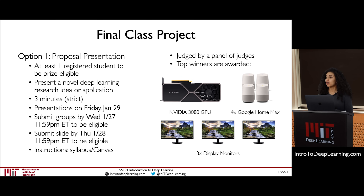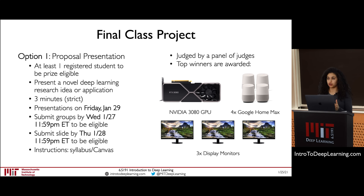For those taking the course for credit, you have two options. The first is a project proposal where you work in a group of up to four to develop a new deep learning idea or application. On Friday January 29th you'll give a brief three-minute presentation to judges. You need to indicate your interest in presenting by Wednesday at midnight eastern time and submit your slide by midnight eastern time on Thursday.